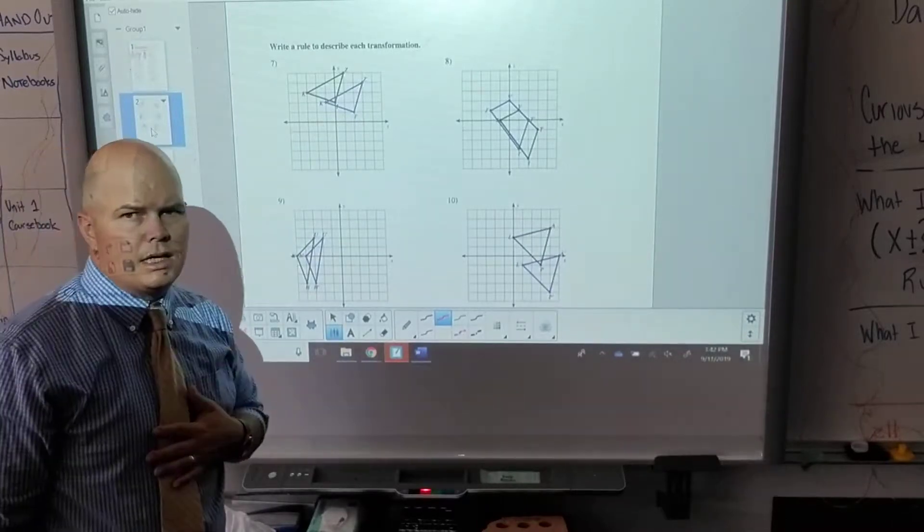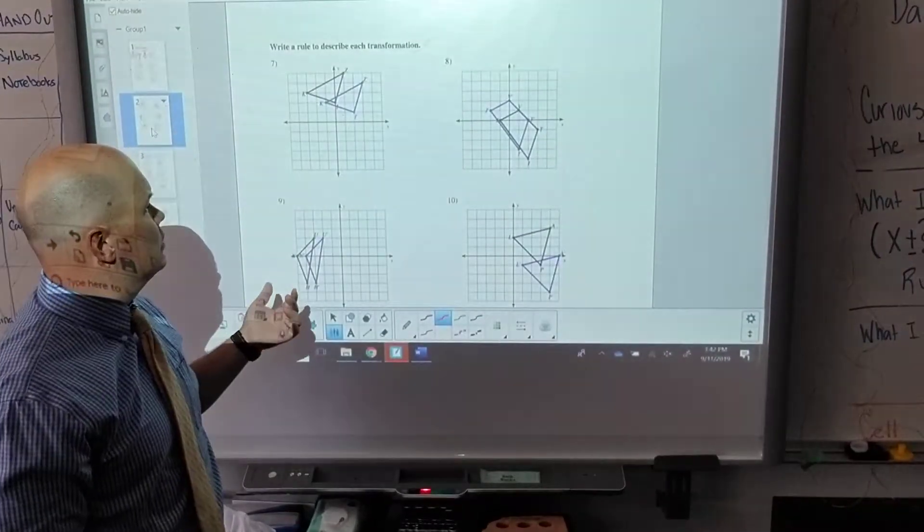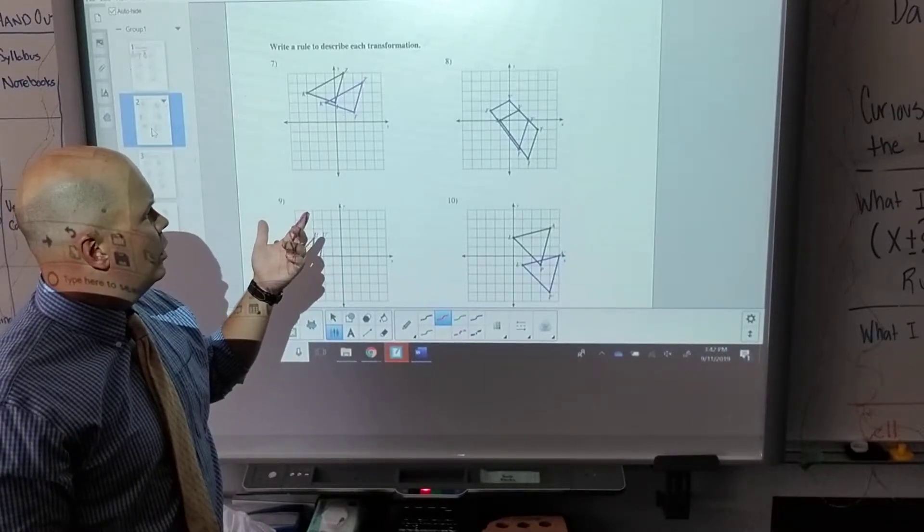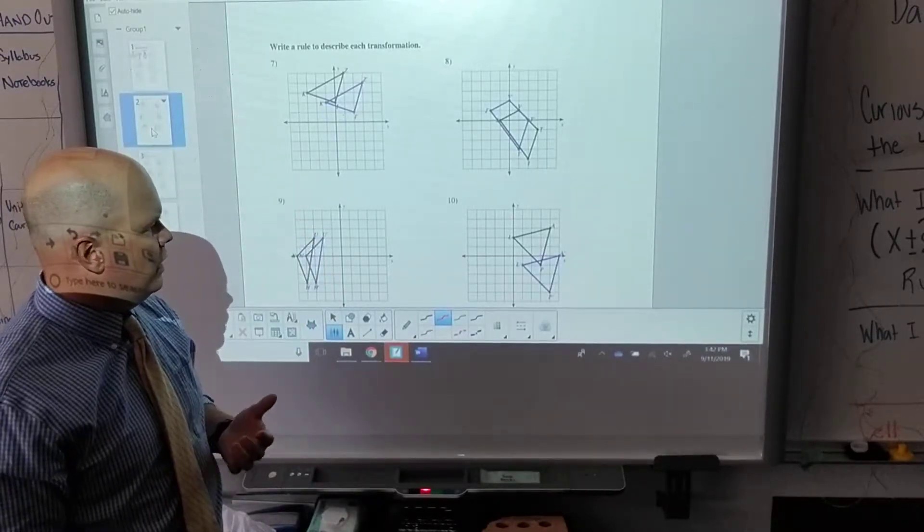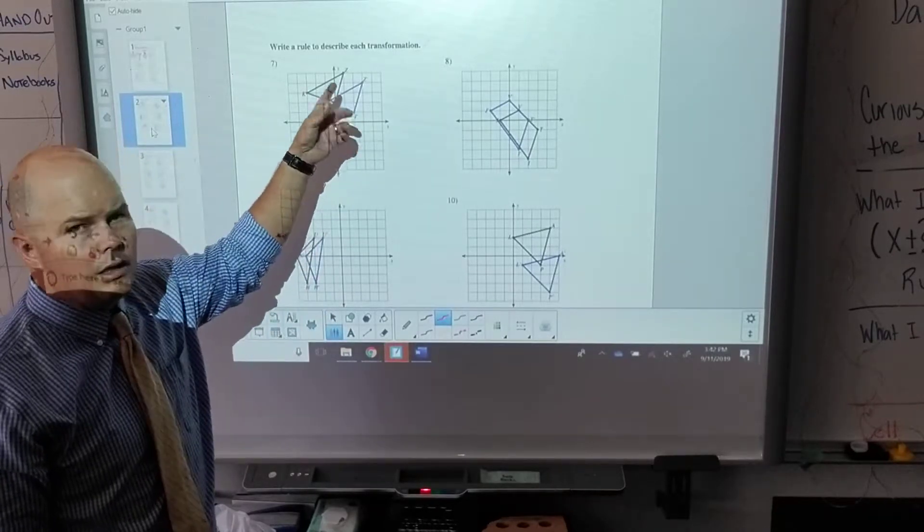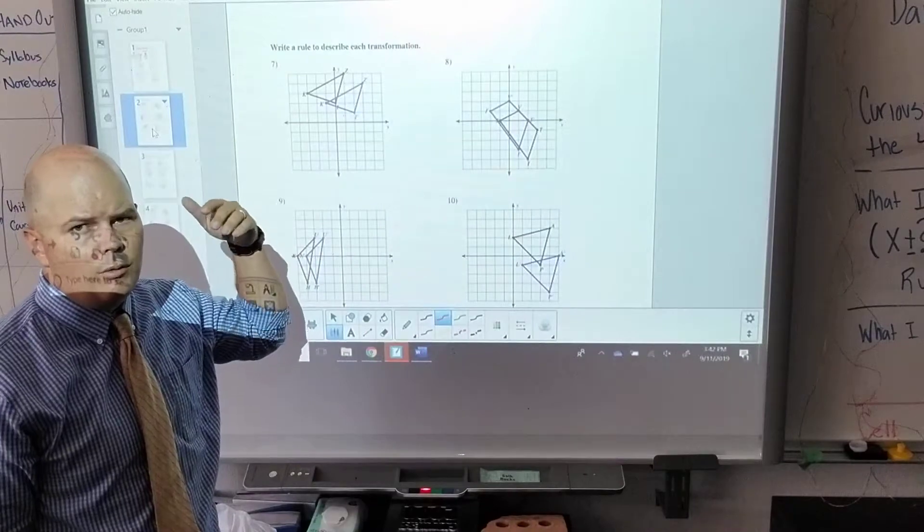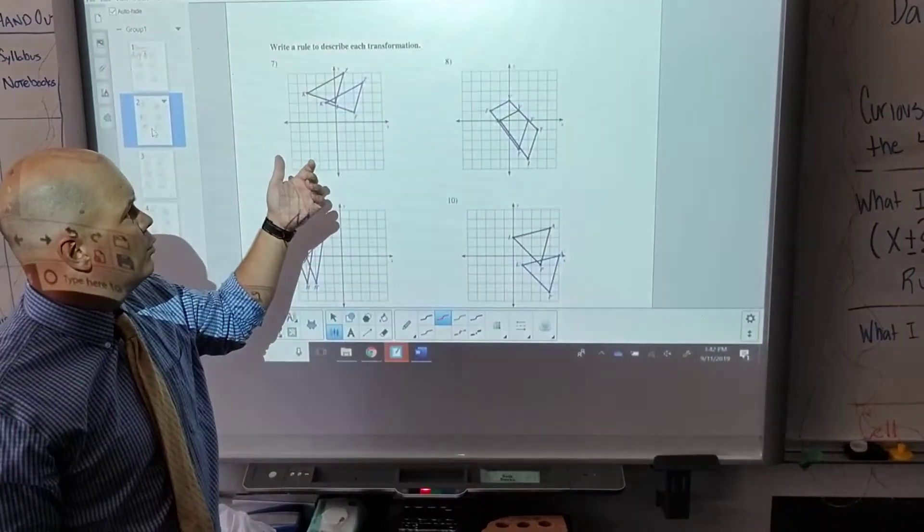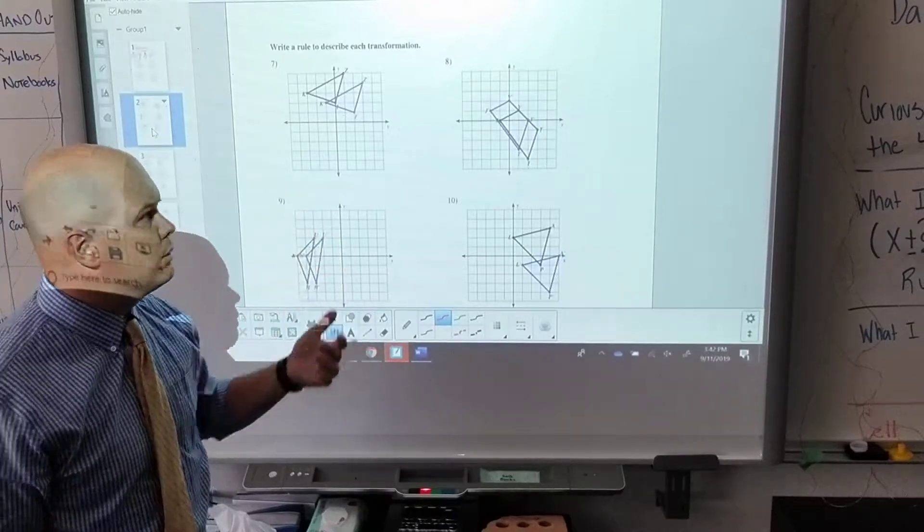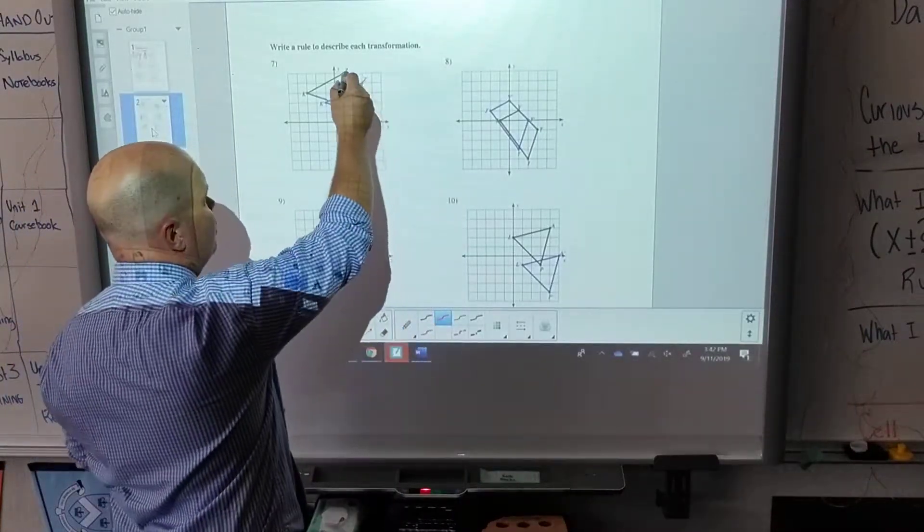Page two looks like this for you guys, and what it's asking is the rule. The key is you have to identify your prime figures. To do that, you're just looking for the little tick mark on it - that's how you know it's the after movement. Then write the rule, and what it's asking you to do is figure out how the shape's moving. So in this case, for number seven, it's moving two units to the right and one unit down.